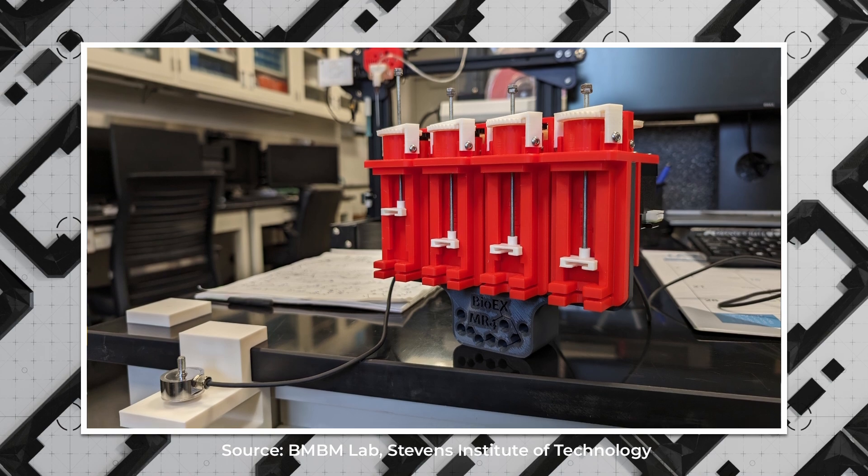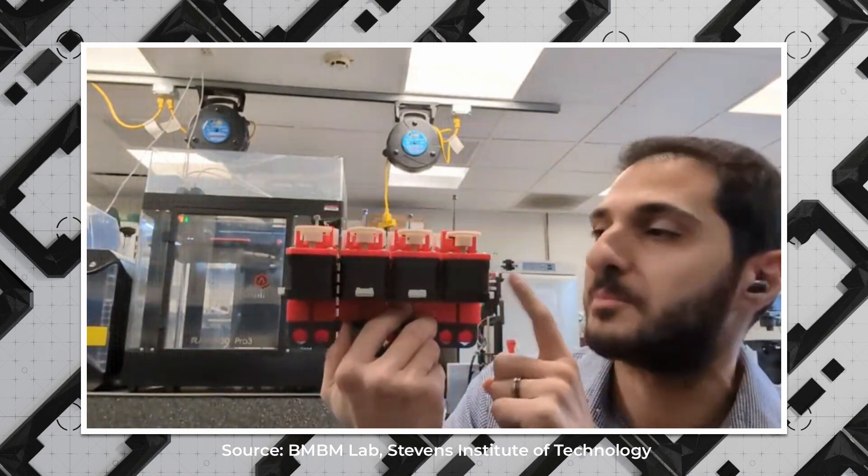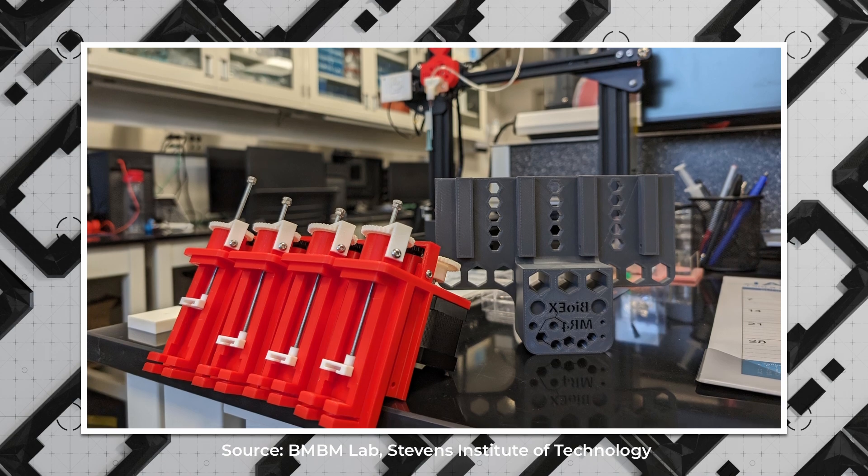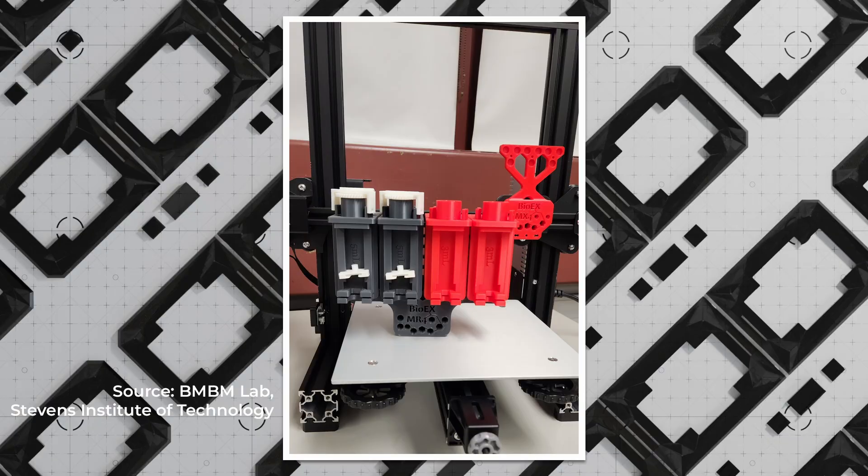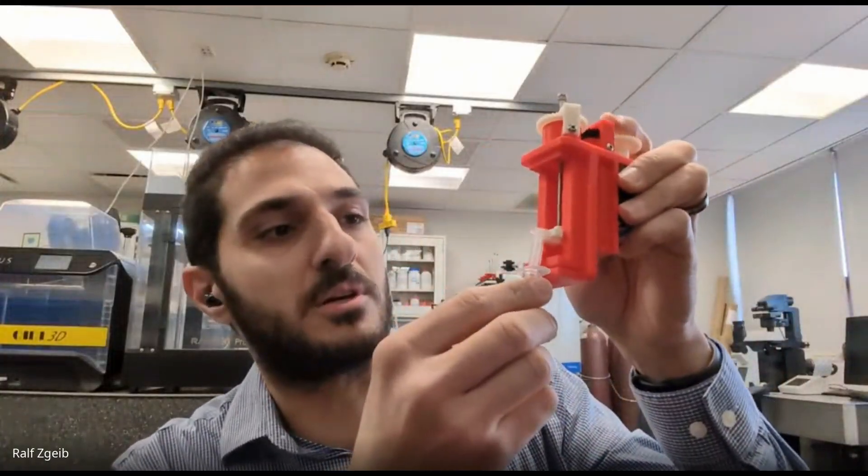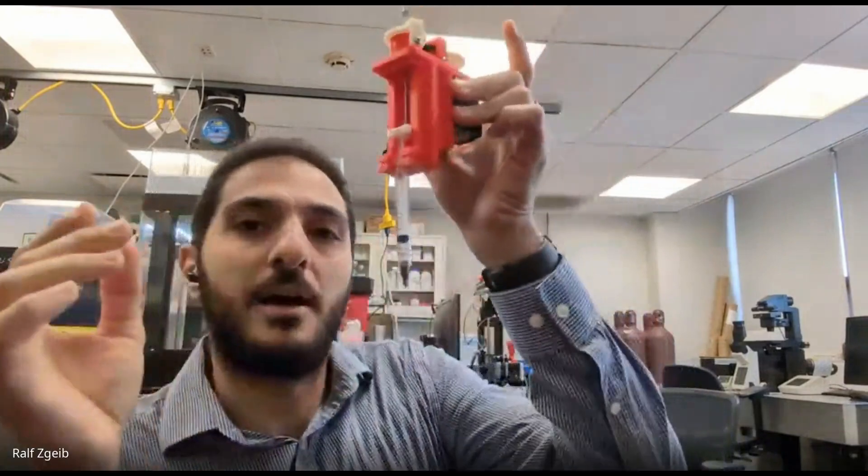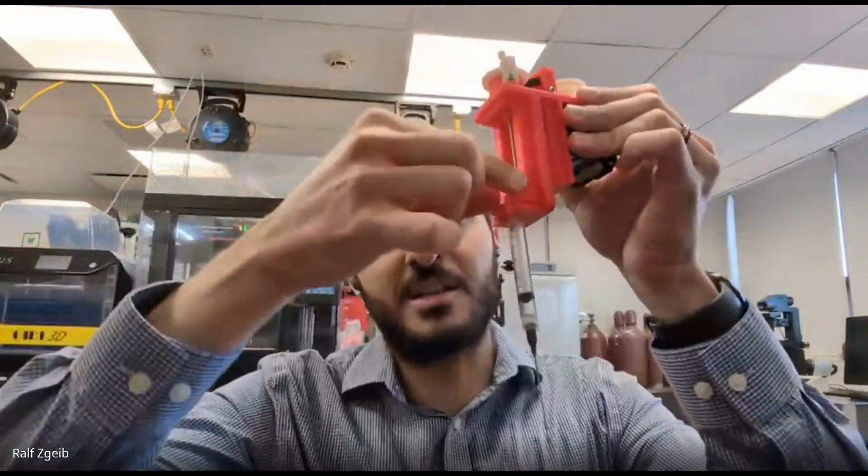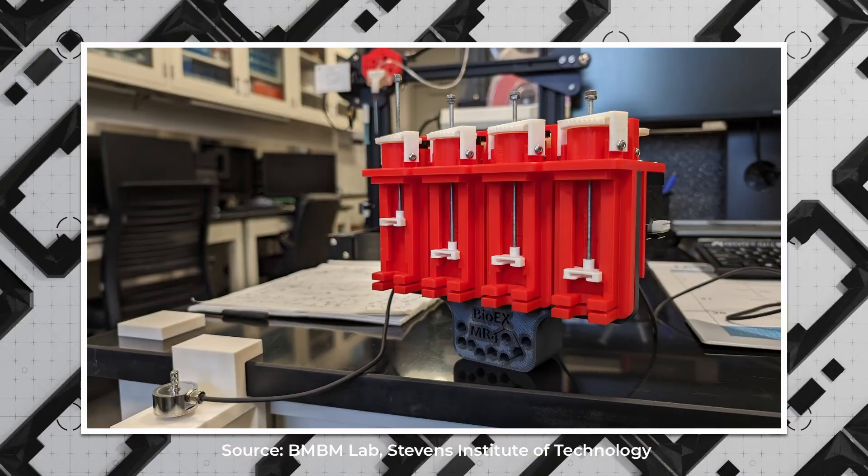We have developed this quad extrusion head, and it's all made of 3D printed parts, except the extrusion stepper motors in the back. This is all 3D printed on the RAISE 3D. We install this on any open source 3D printers. It can go into this extruder that we designed, and now this can be controlled in extruding the material inside this syringe.